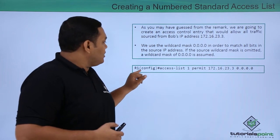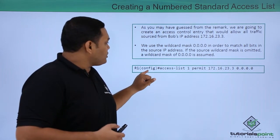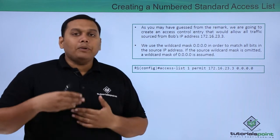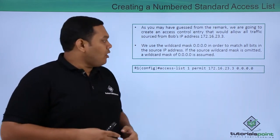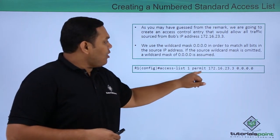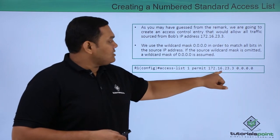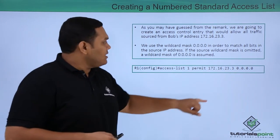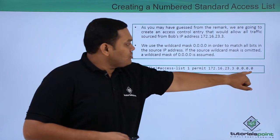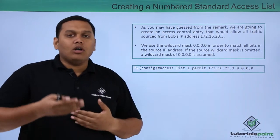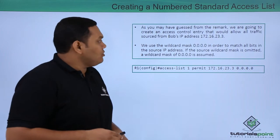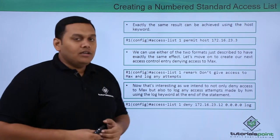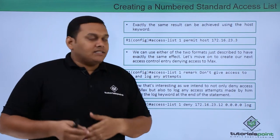To create the actual access list entry, in router configuration mode, we use: 'access-list 1 permit 172.16.23.3 0.0.0.0' — using the permit command with Bob's IP address and a wildcard mask of 0.0.0.0 to match all bits in the packet.